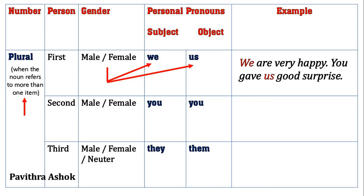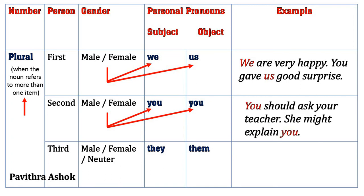Next, second person personal pronoun in plural number. For male and female both, subject is you and object is also you. For example: 'You should ask your teacher. She might explain you.' In the first sentence, 'you' is used in the place of a subject, whereas in the second sentence, 'you' is used in the place of the object.